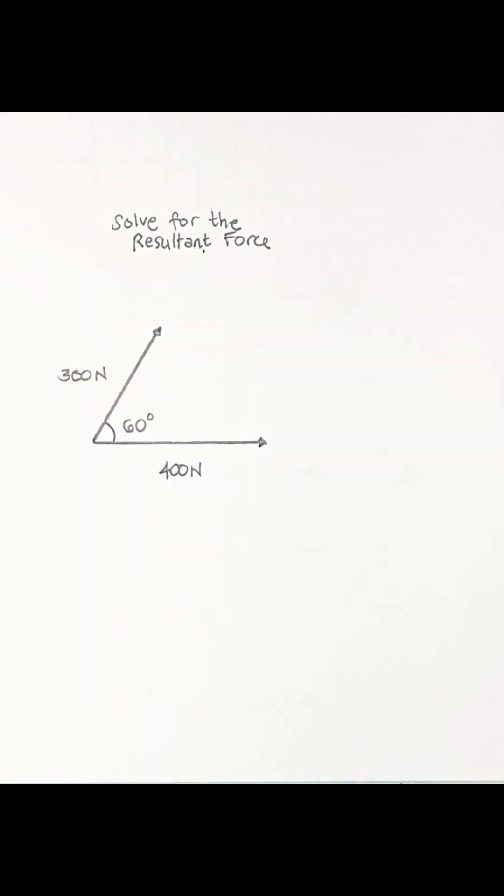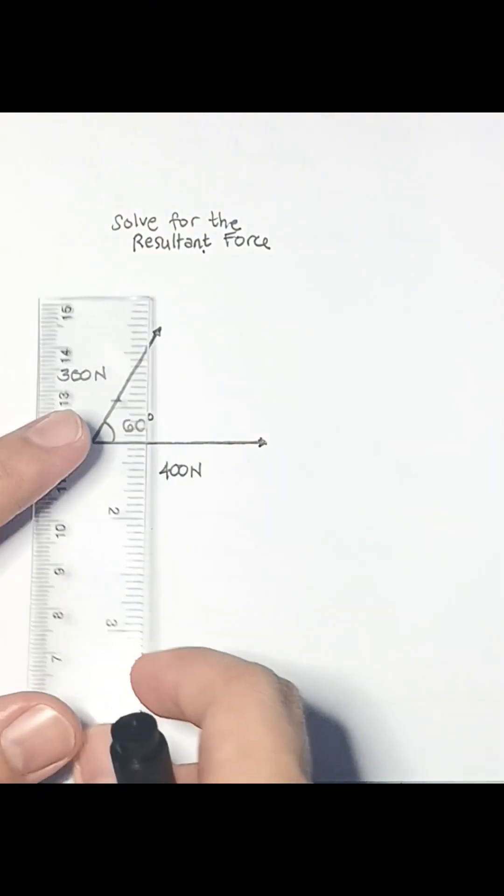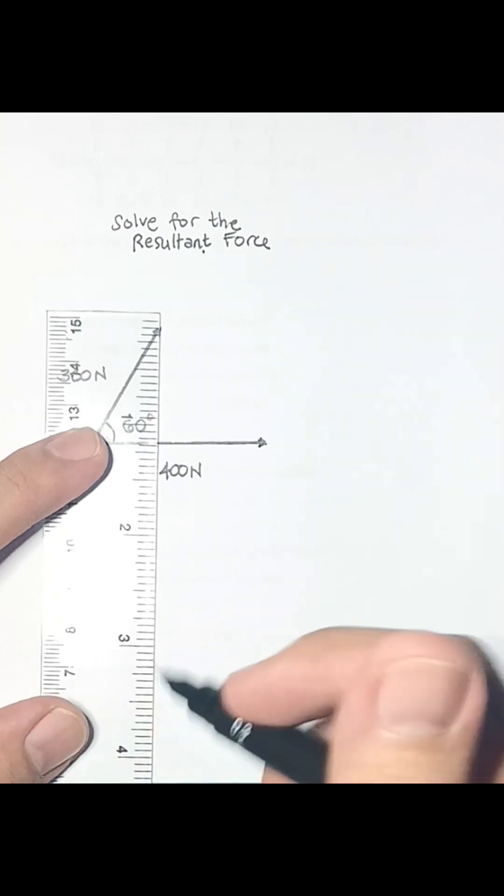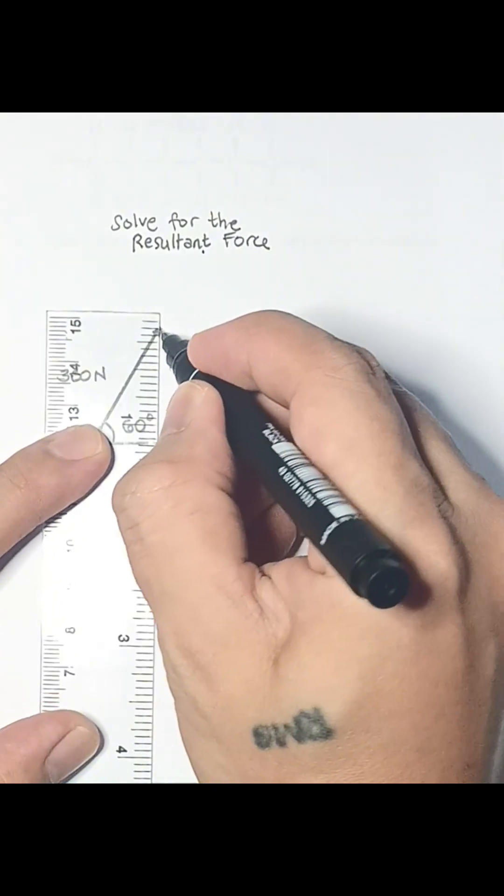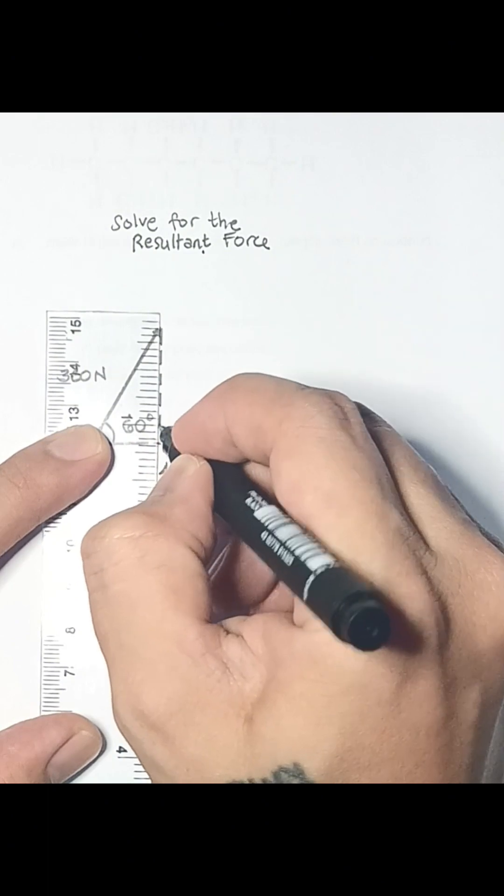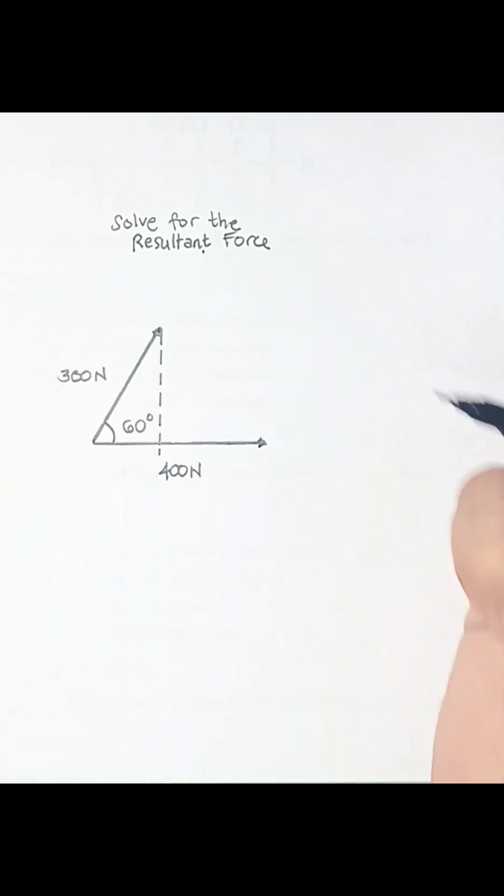This is a classic example of solving for the resultant force using knowledge from basic trigonometry. There is a 60 degree angle between two forces, 300 newtons and 400 newtons respectively.